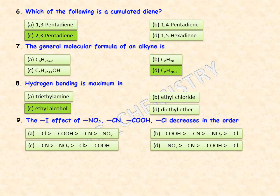The −I effect of nitro, cyano, carboxylic acid, and chloro groups decreases in which order? The nitro group exerts the greatest −I effect, and chloro should be the least. Option D fits: NO₂ > CN > COOH > Cl, so option D is the right answer.